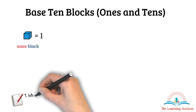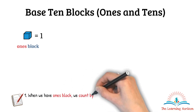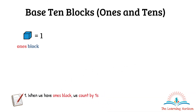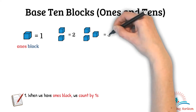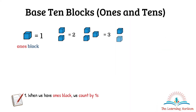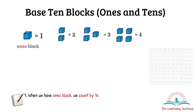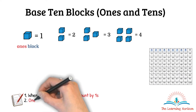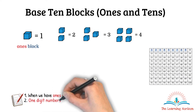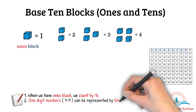When we have ones blocks we count by ones. For example, here we have two blocks — two blocks represents the number two, three blocks represents the number three, four blocks is equal to four. All the one-digit numbers from one to nine can be represented by ones blocks.